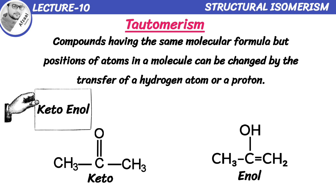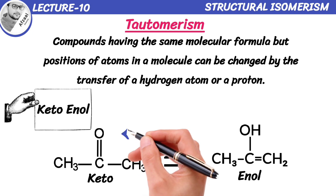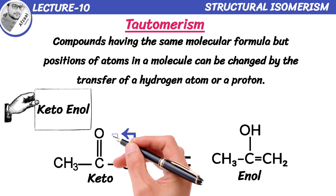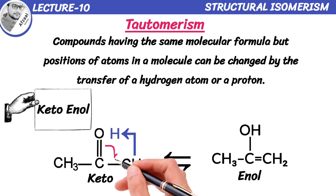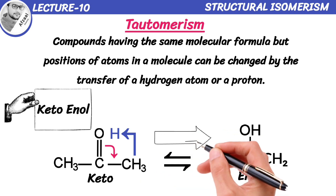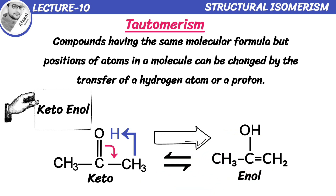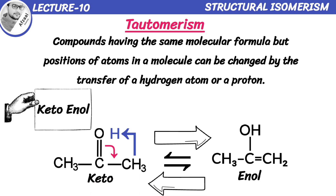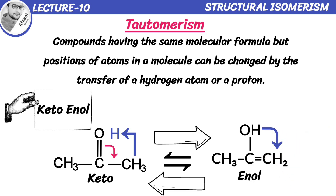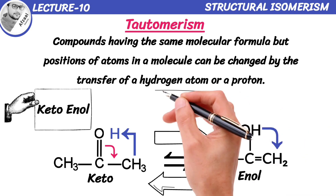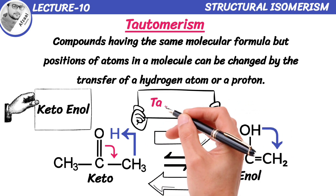Now here it gets interesting. These two forms can easily interconvert with each other. If we start with the keto form, when conditions favor it, a hydrogen atom from an adjacent carbon shifts over to oxygen, forming a double bond between carbon atoms and creating the enol form. Remember, this process is reversible, so if conditions change, the enol form can convert back into the keto form by shifting that hydrogen atom back. Thus, compounds can exist in two interconvertible structures known as tautomers.